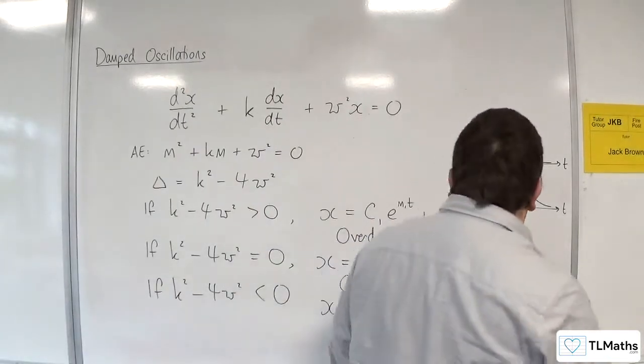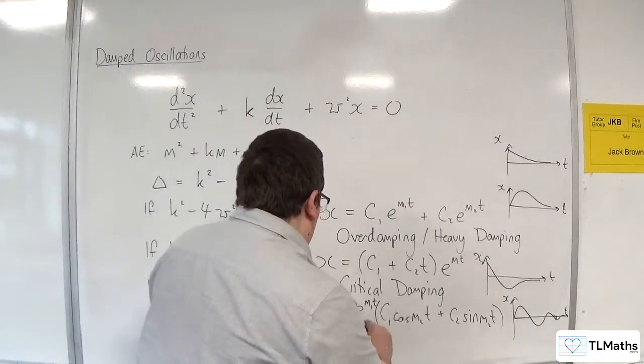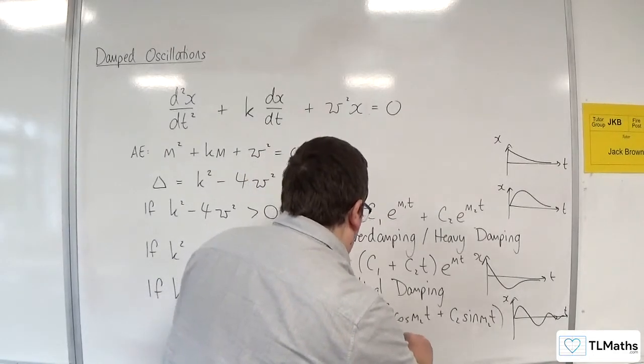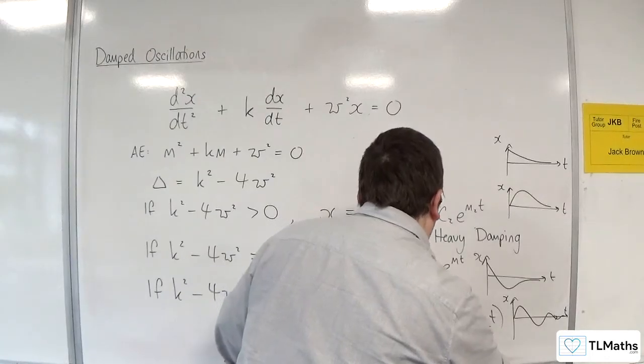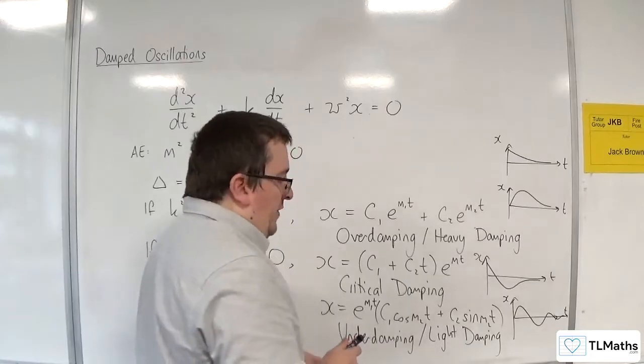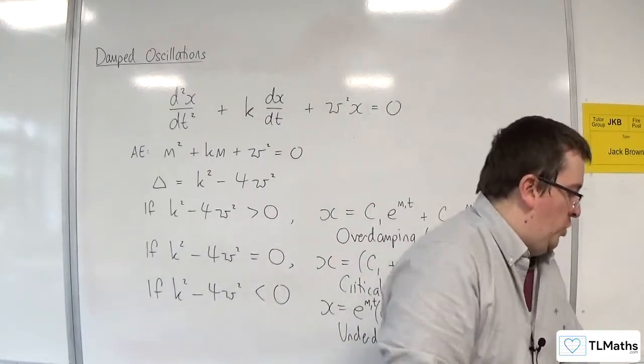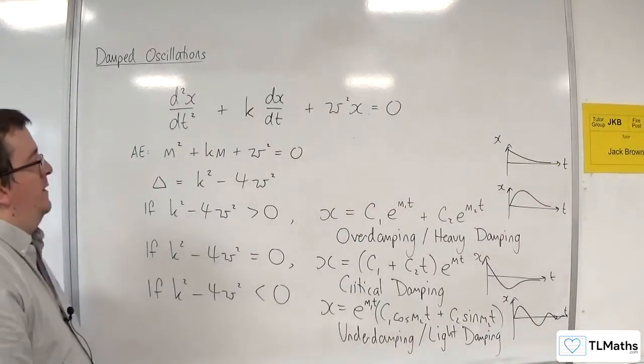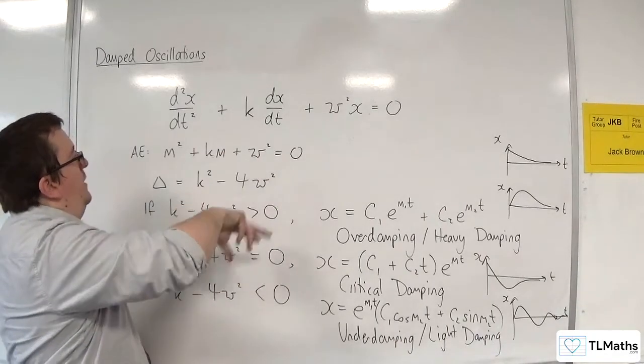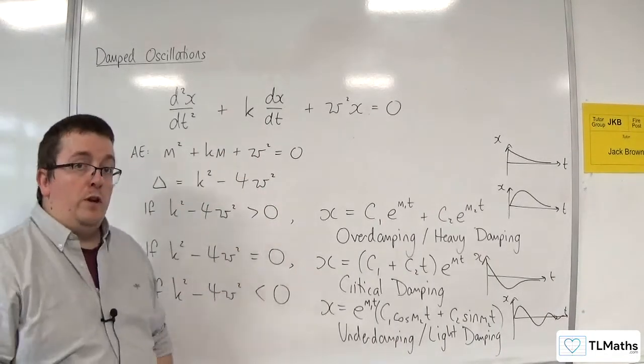So that is underdamping or light damping. So these are the three situations that we can come across and it's all down to the discriminant of your auxiliary equation.